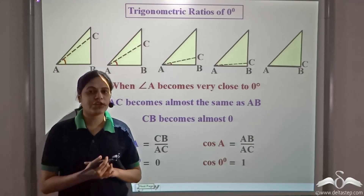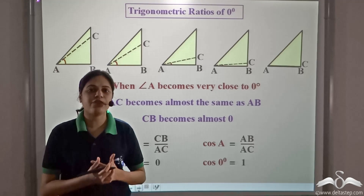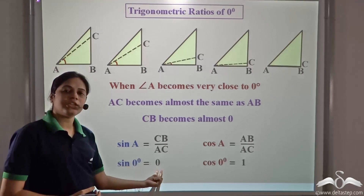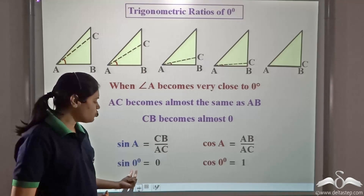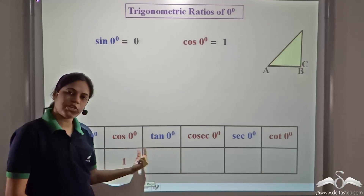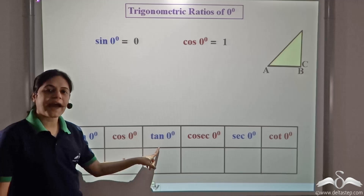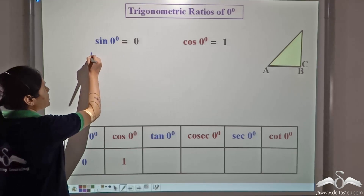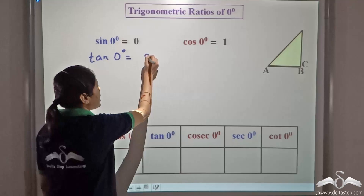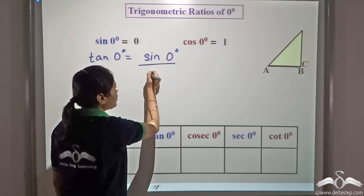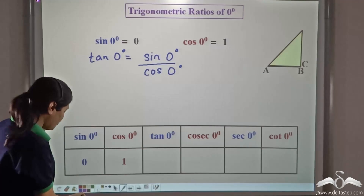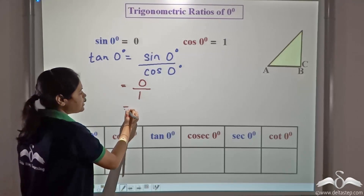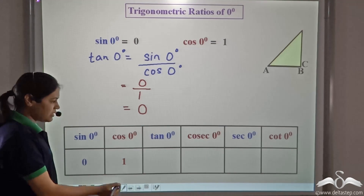Just like we found the trigonometric ratios for special angles thirty degree, sixty degree, and forty-five degree, we can find them for zero degree as well. Sin zero degree is zero and cos zero degree is one. We know that tan theta is the ratio of sin theta to cos theta. So tan zero degree is equal to sin zero degree divided by cos zero degree, which is zero divided by one, which equals zero.